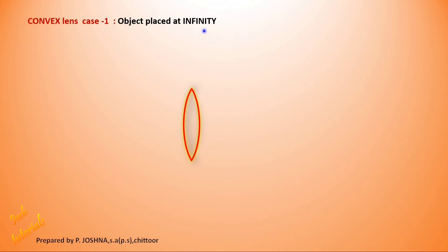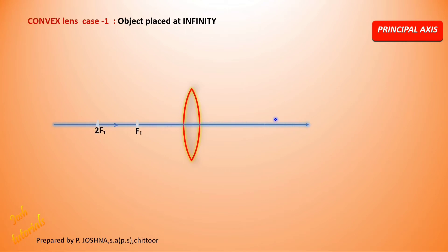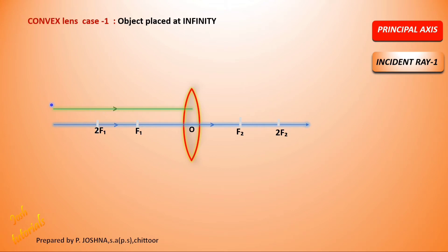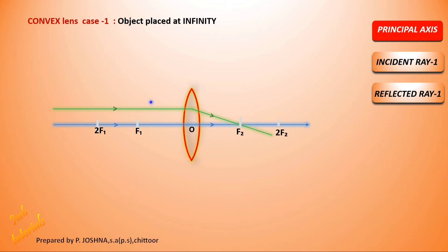Case 1: Object is placed at infinity — let it be the sun or some very distant object. First draw the principal axis passing through the optic center, and mark the points 2F2, F2, O, F1, 2F1 at even distances. Now draw the first incident ray: since the object is at infinity, the ray comes from a long distance and is parallel to the principal axis, so by Rule 1 the refracted ray passes through the focus F1.